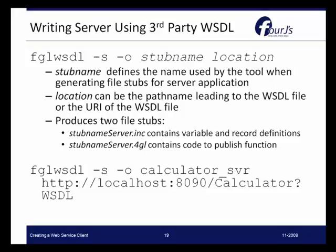You can also use a server that includes a third party's web service. As we saw in a prior video on creating the client application for a service, we had to first generate the information from that service to use. The same is true if you're writing a server using a third-party WSDL — you will need the WSDL location, and then the FGL WSDL tool will generate the globals file and the generated BDL functions in the source 4GL file.